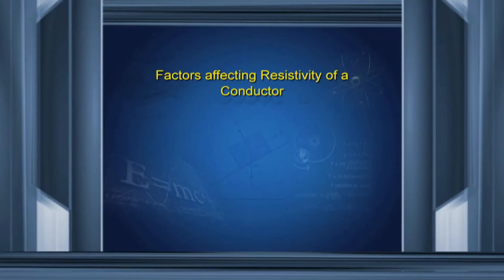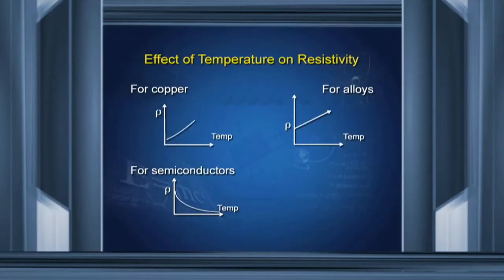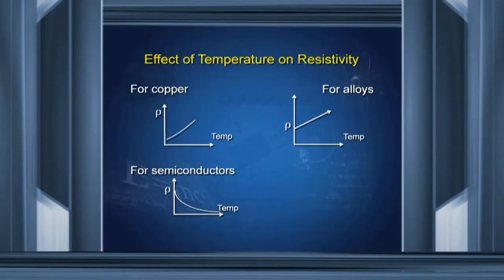Factors affecting the resistivity of a conductor: since ρ = m/(ne²τ), where m and e are constants, resistivity is inversely proportional to n and τ. Effect of temperature on resistivity: for copper, resistivity increases with rise in temperature — slowly at first, then more rapidly at higher temperatures. For alloys, resistivity remains almost constant with high temperature. For semiconductors, resistivity decreases with rise in temperature. Following graphs represent the variation of resistivity with temperature.